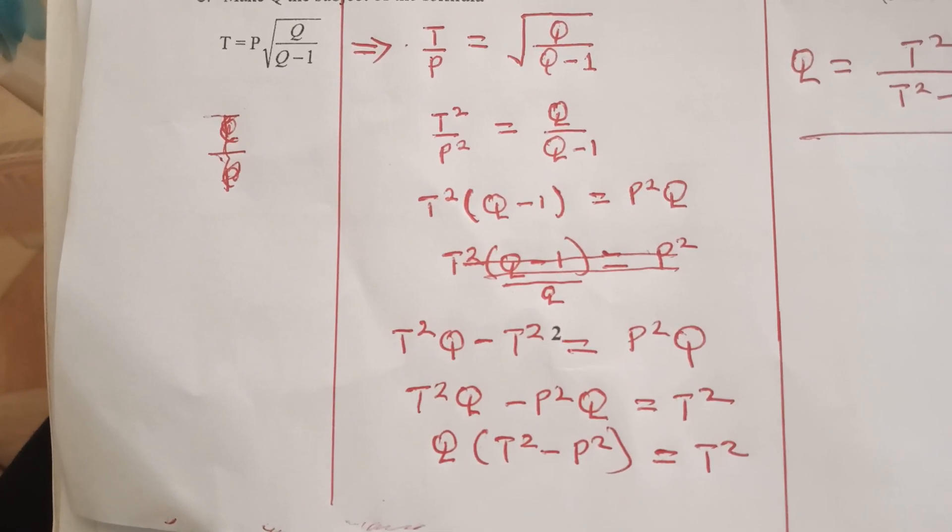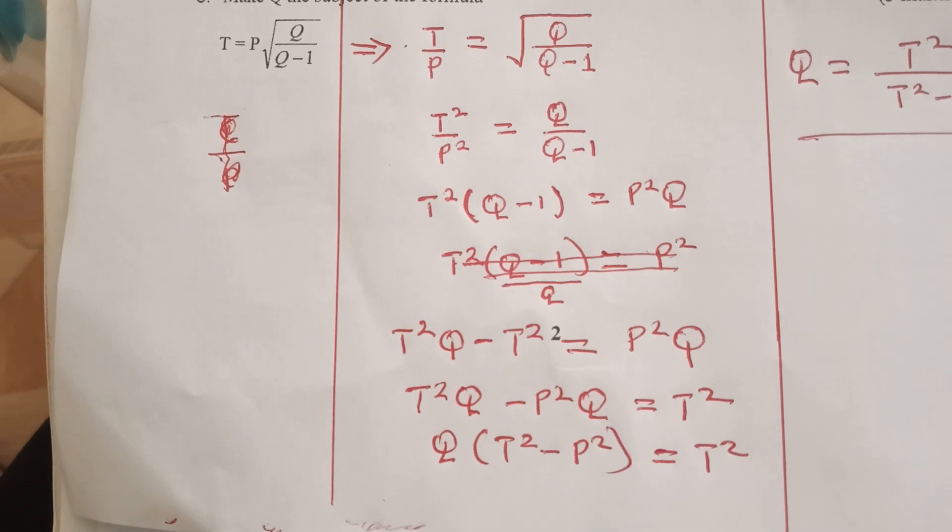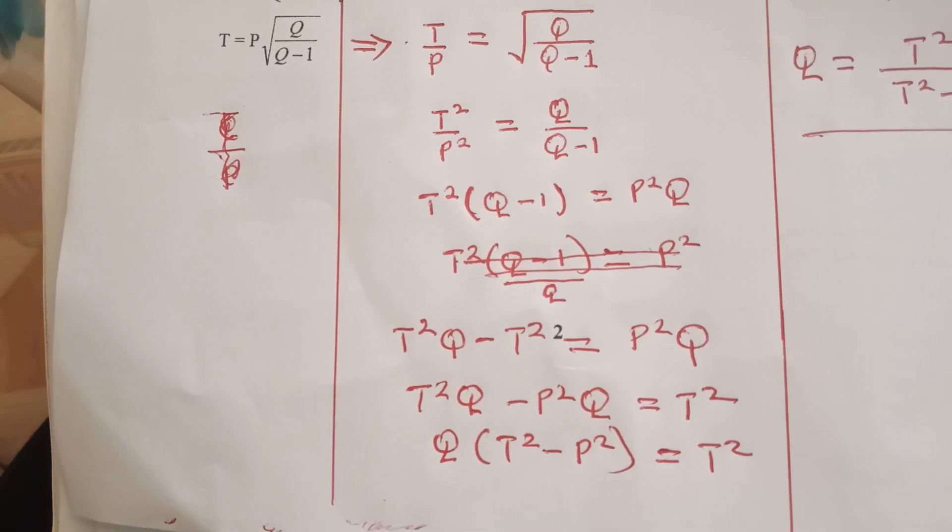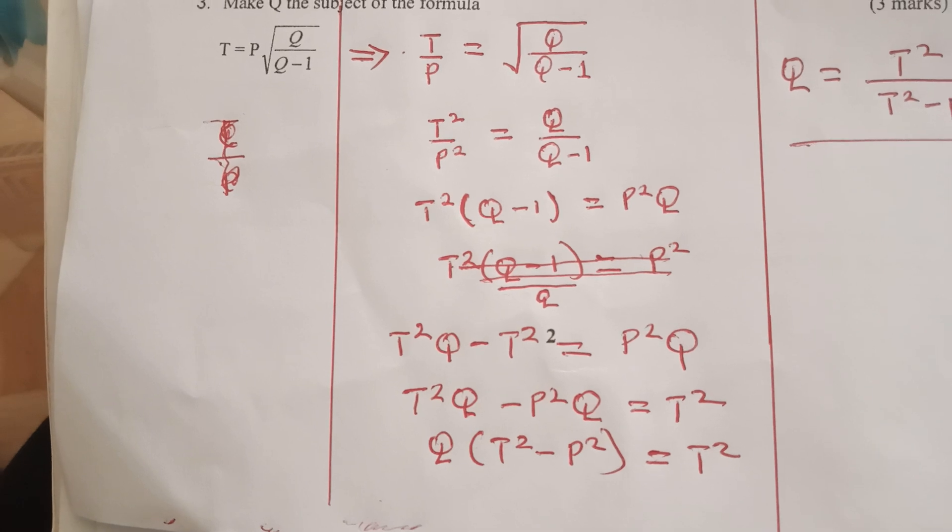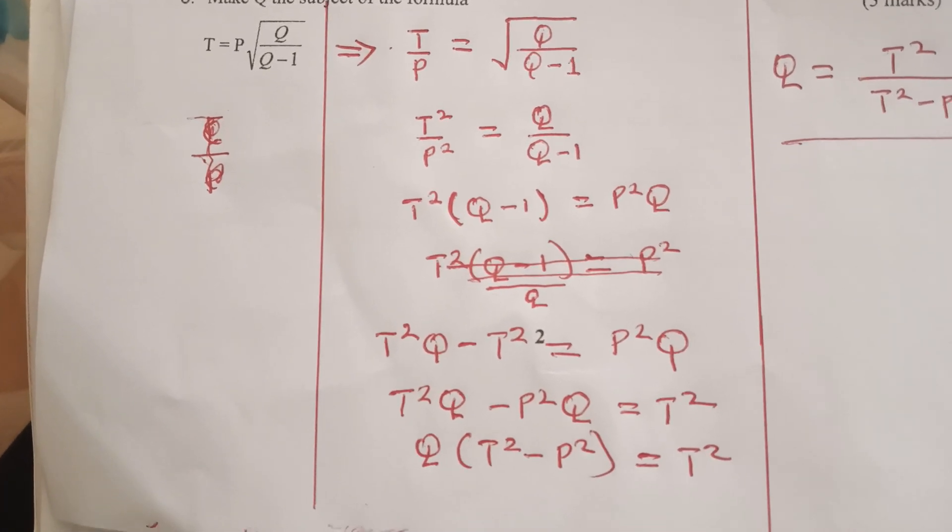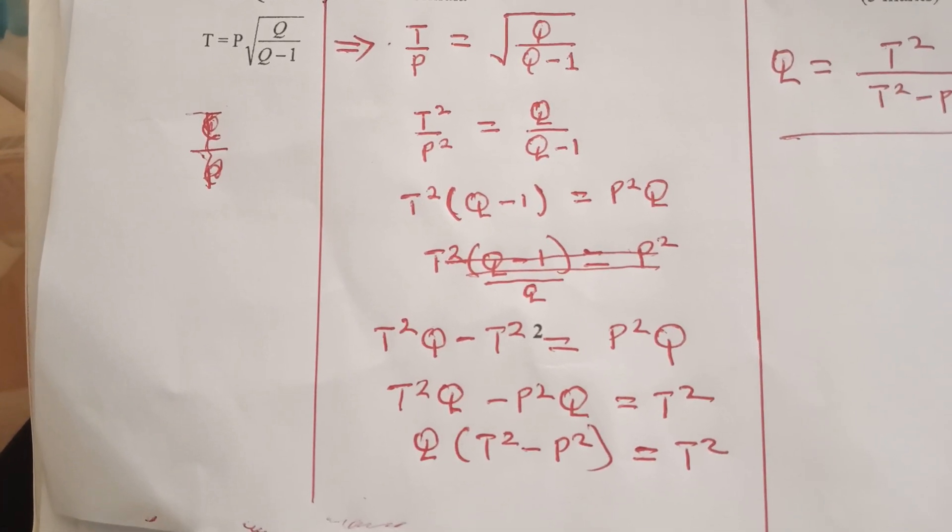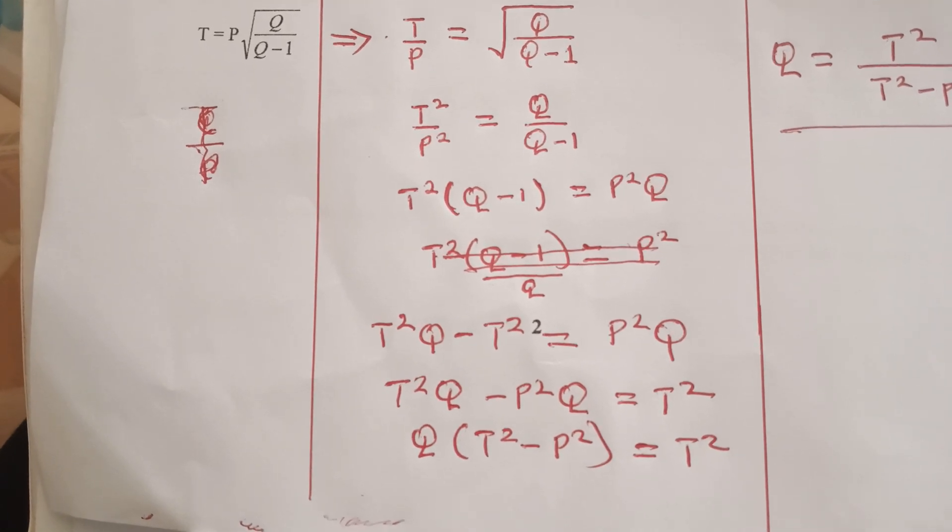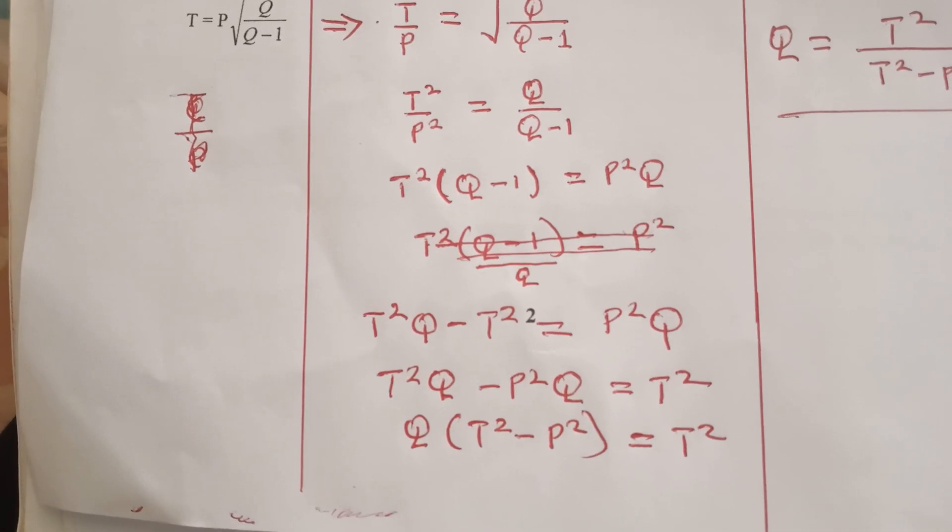Then we will remove the bracket on the left hand side, we have T squared Q minus T squared, which equals P squared Q. So, we collect the like terms.